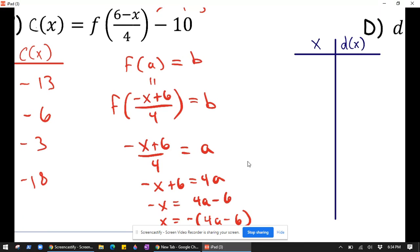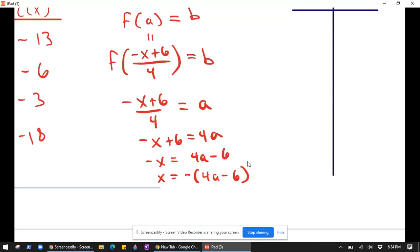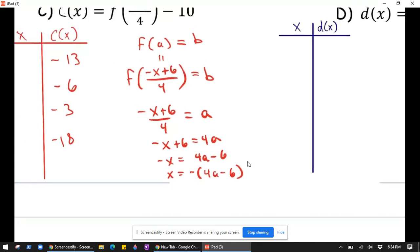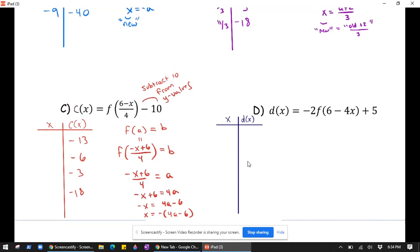So there's our instructions for our new x values. We take our old x values, times by 4, minus 6, and then multiply by negative 1. So that's kind of a lot. Let's see if we can do this or if I can do it in my head.